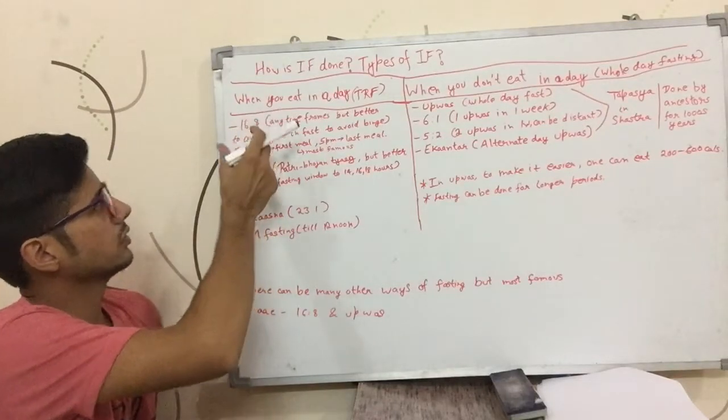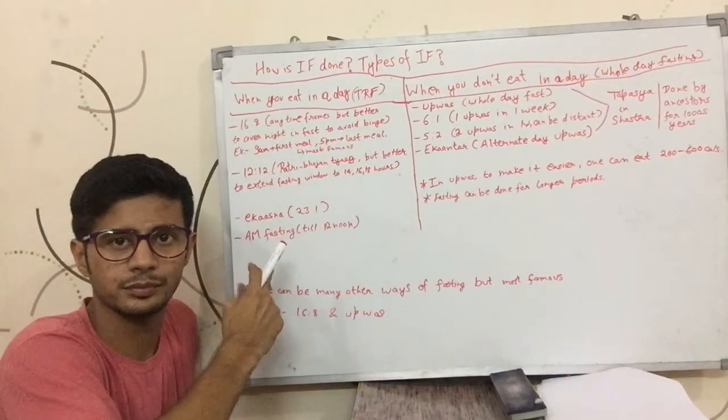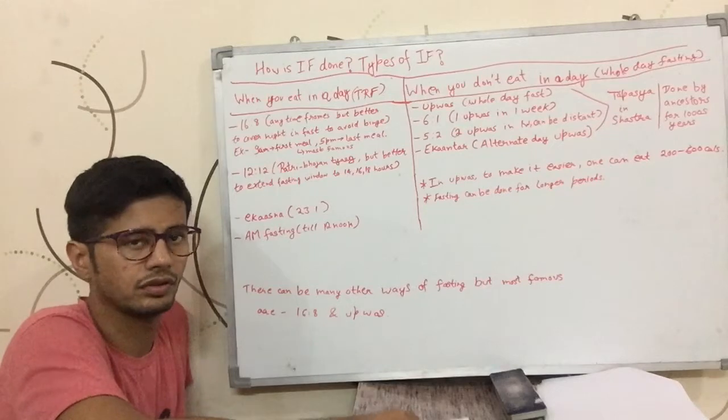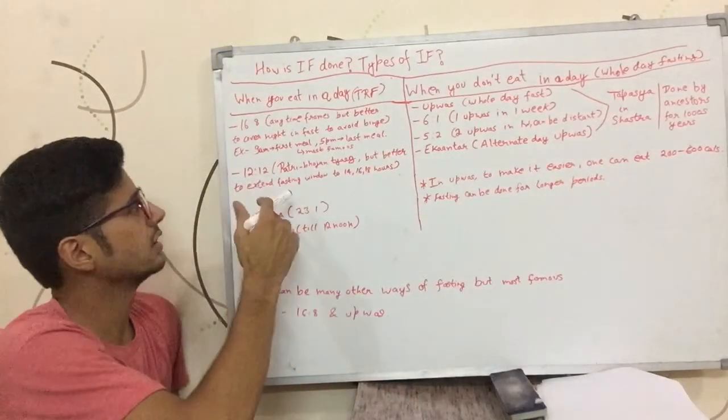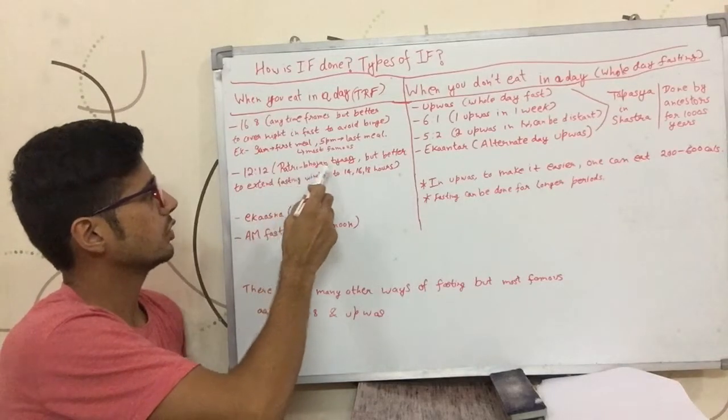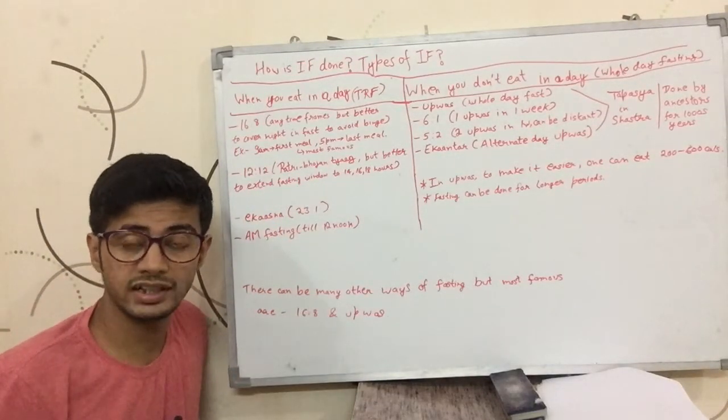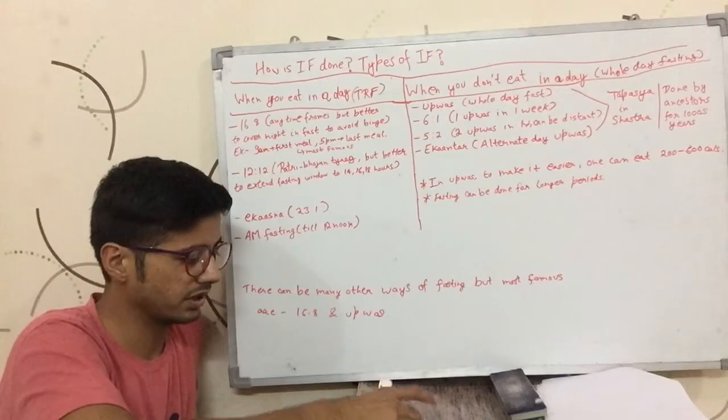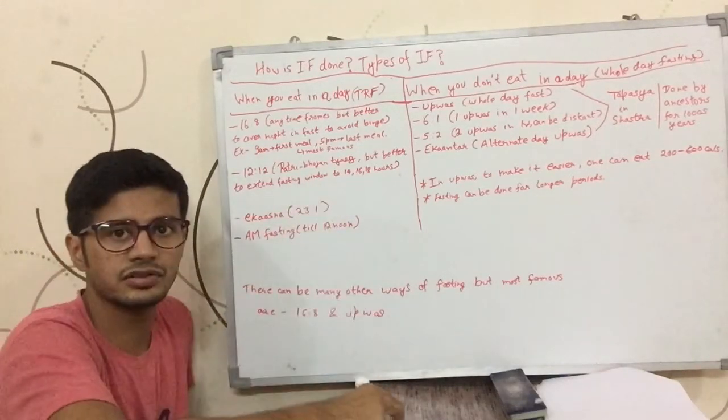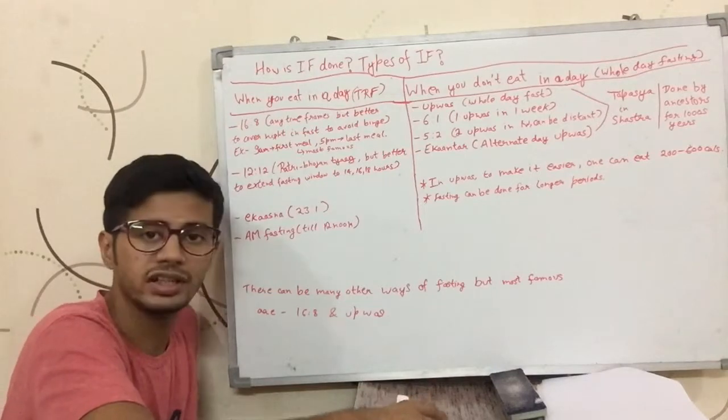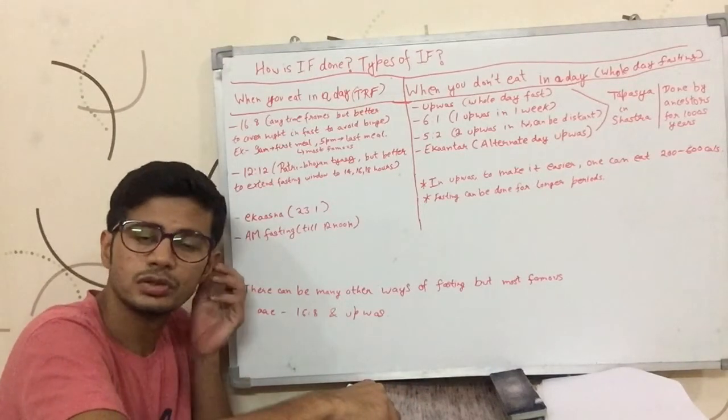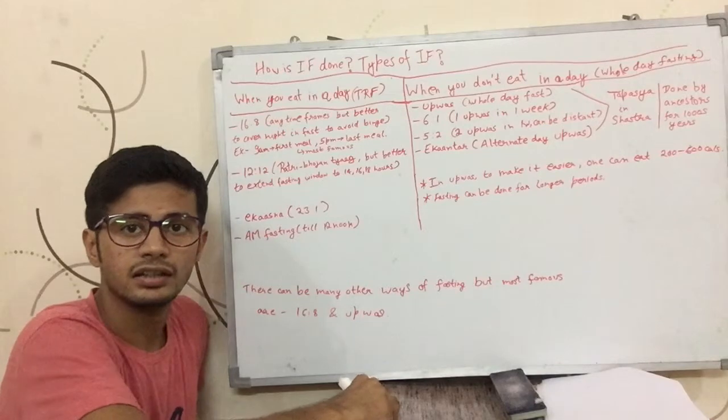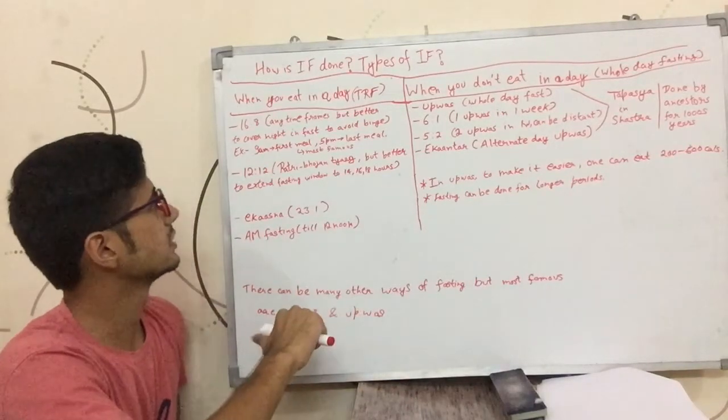Now if you shorten the time frame of this fasting window, you can fast for 12 hours and eat in the 12-hour window, which is a more lenient method than 16:8. This can be thought of as Ratri Bojantyag, where we do not eat at night. It's similar to what our ancestors used to do—after sunset around 6 or 7 PM till sunrise around 6 or 7 AM, they would not be eating for about 12 hours.